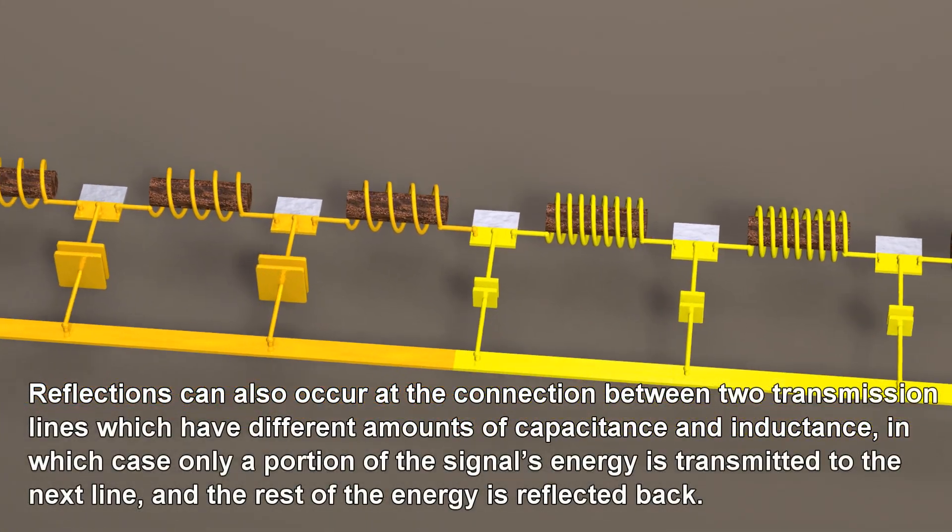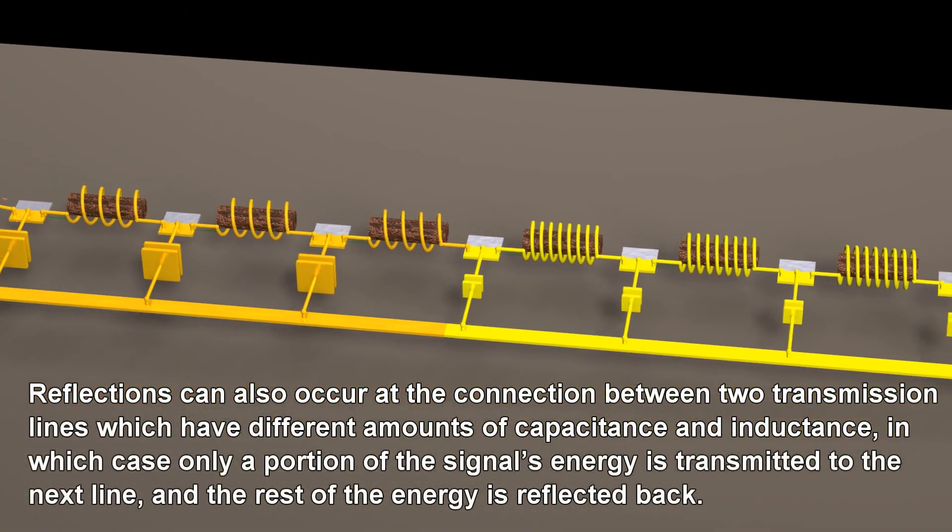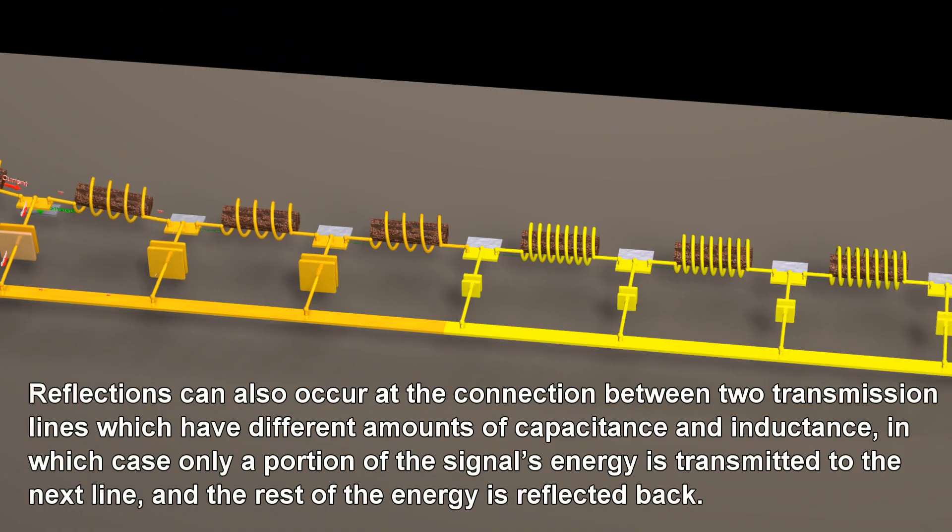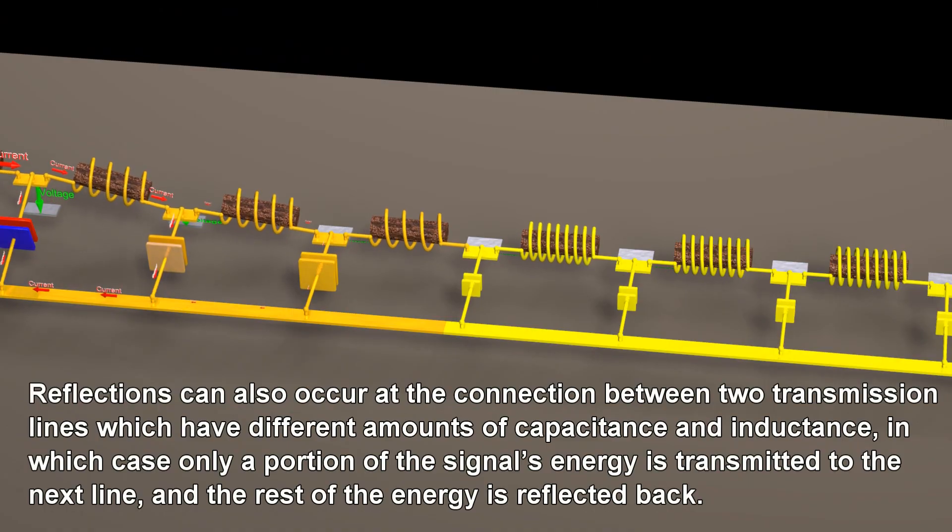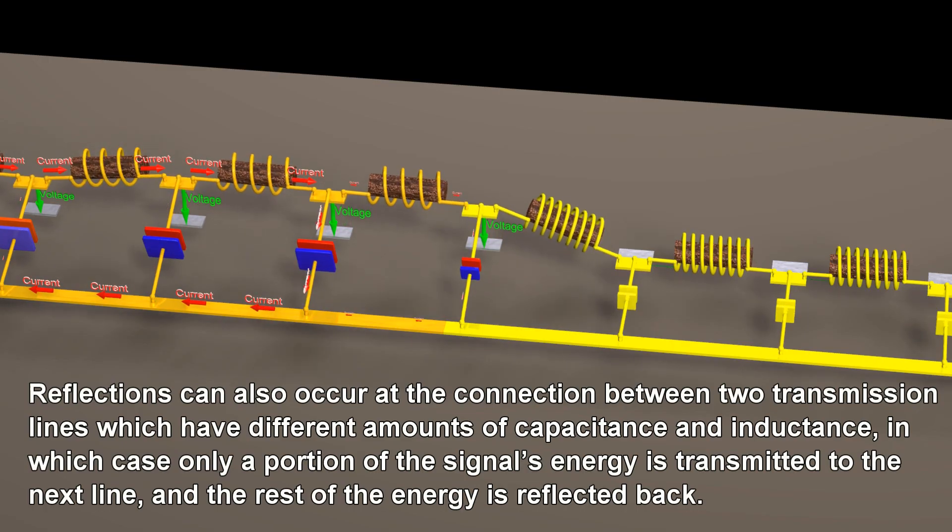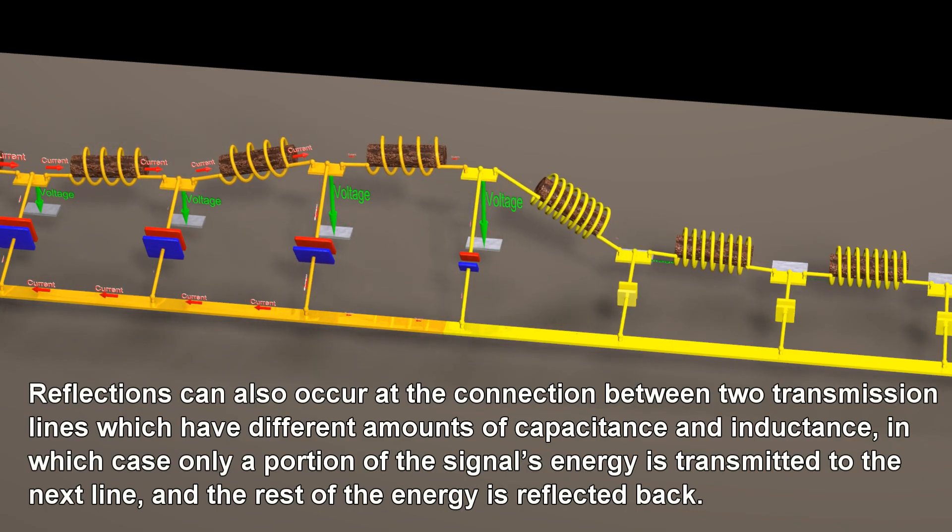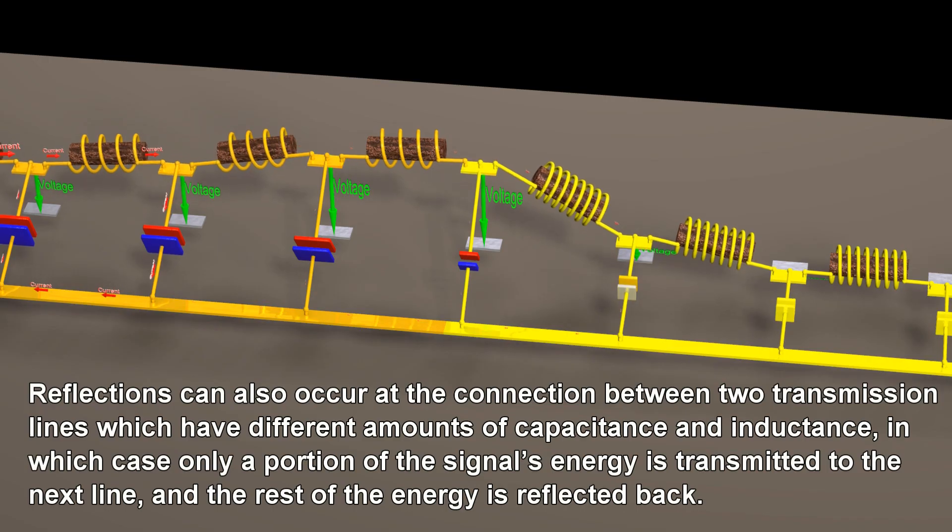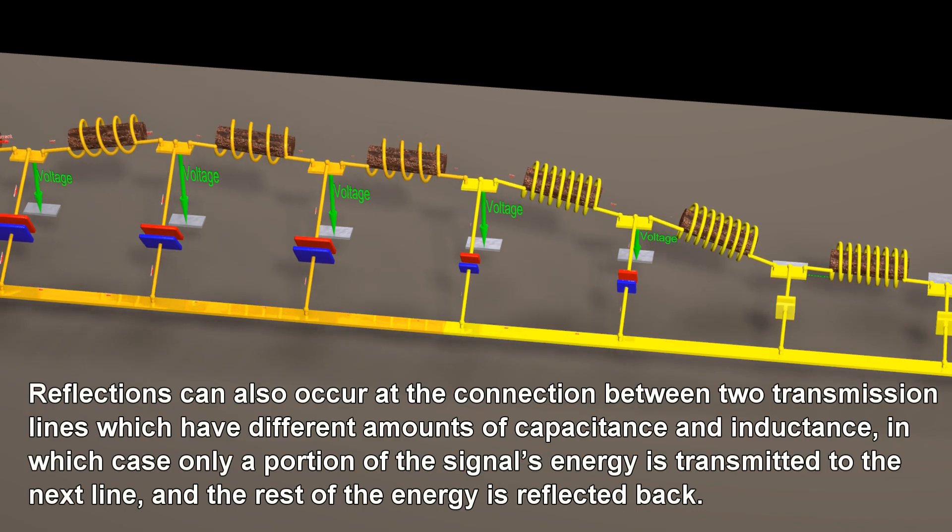Reflections can also occur at the connection between two transmission lines which have different amounts of capacitance and inductance, in which case only a portion of the signal's energy is transmitted to the next line, and the rest of the energy is reflected back.